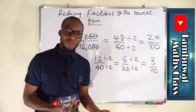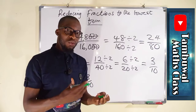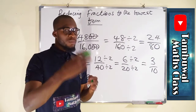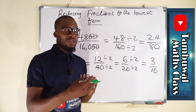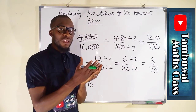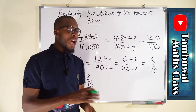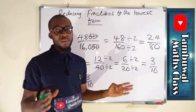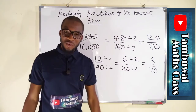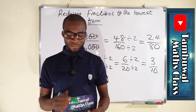This is how to reduce a fraction to its lowest term — you divide the numerator and denominator by their common factors simultaneously until you reach a fraction in which they have no common factor, and then you stop. Thank you for watching, do have a nice day.